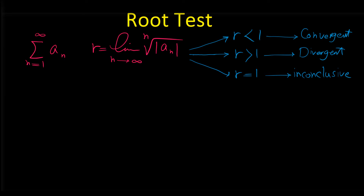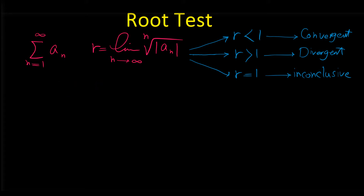We usually use the root test to determine the convergence or divergence of series whose general term a sub n is in the form of something to the power of n, like 2 to the power of n or 10 to the power of n. Now let's do an example. Consider the series sigma n from 1 to infinity of 2 to the power of n over e to the power of n. We want to use the root test to determine the convergence or divergence of this series.